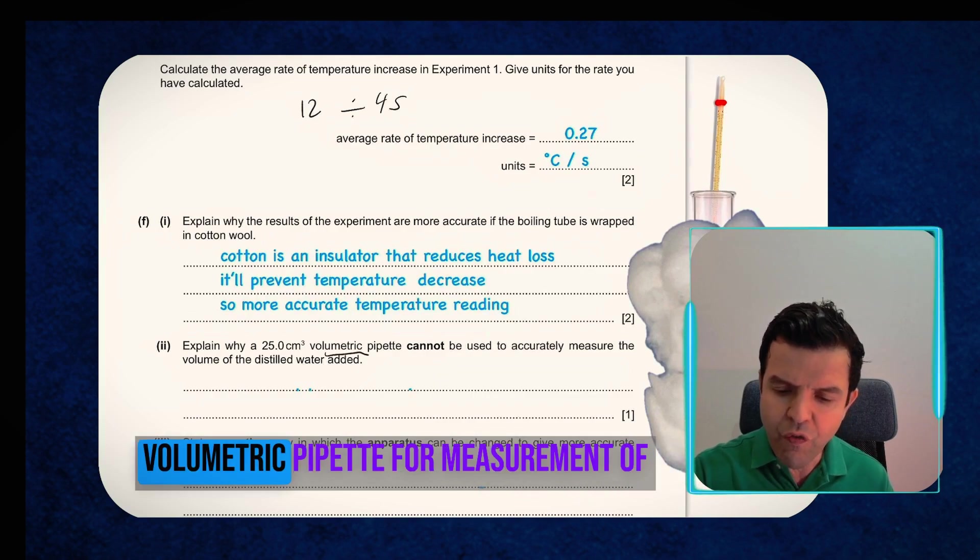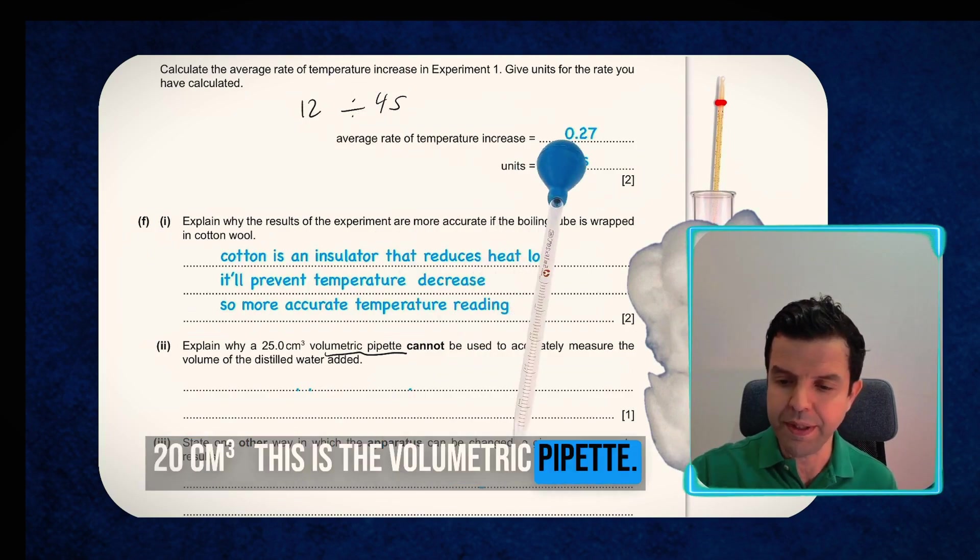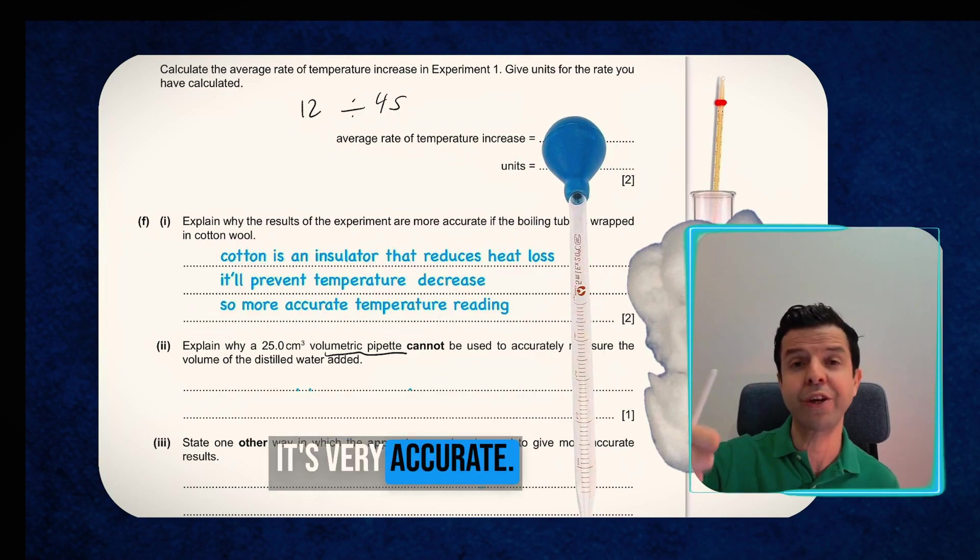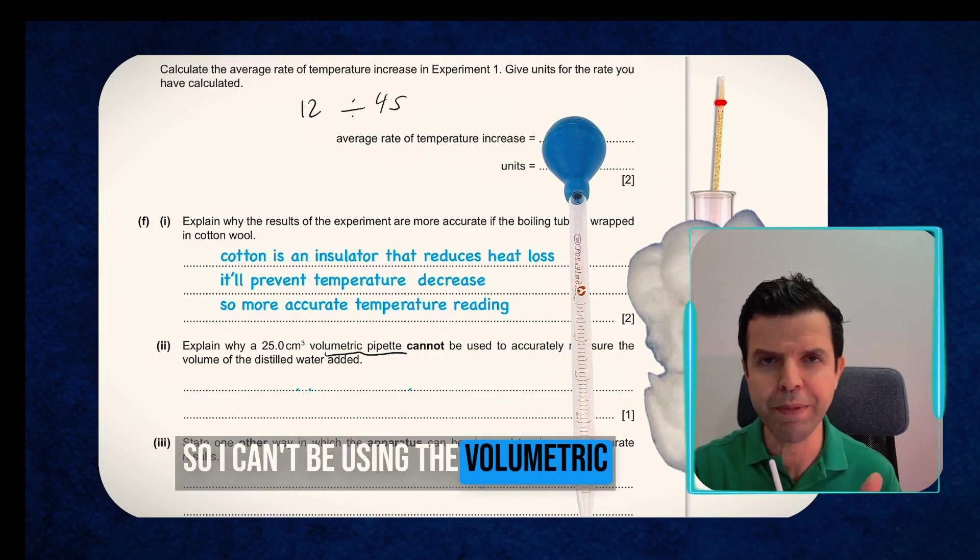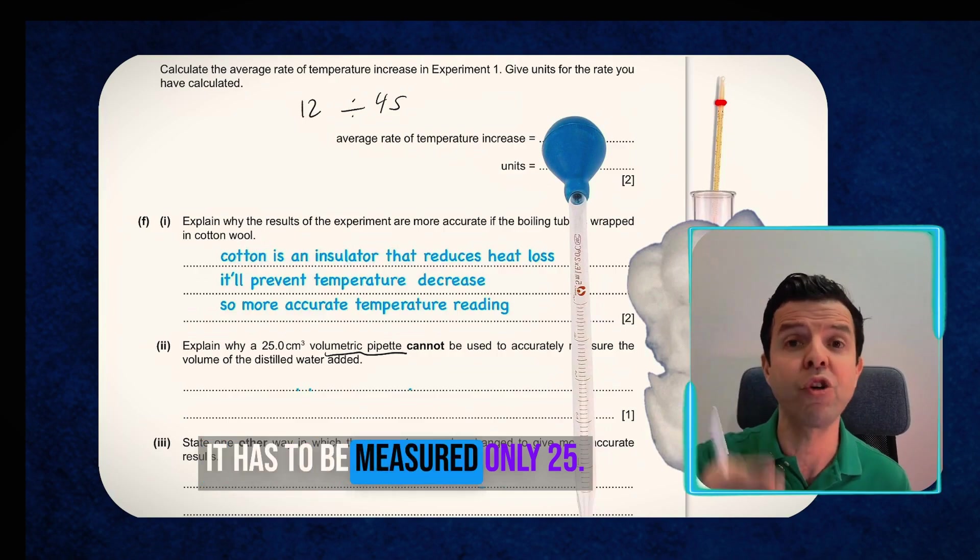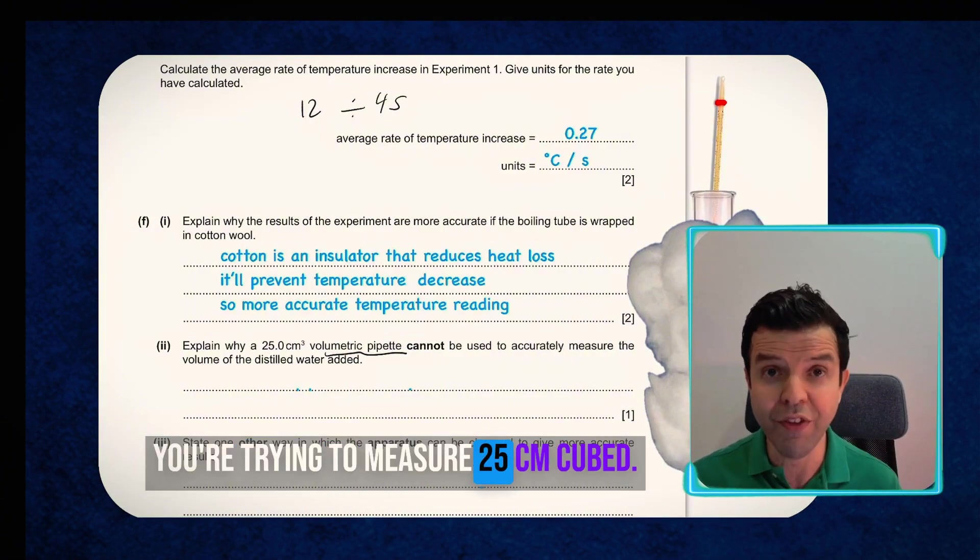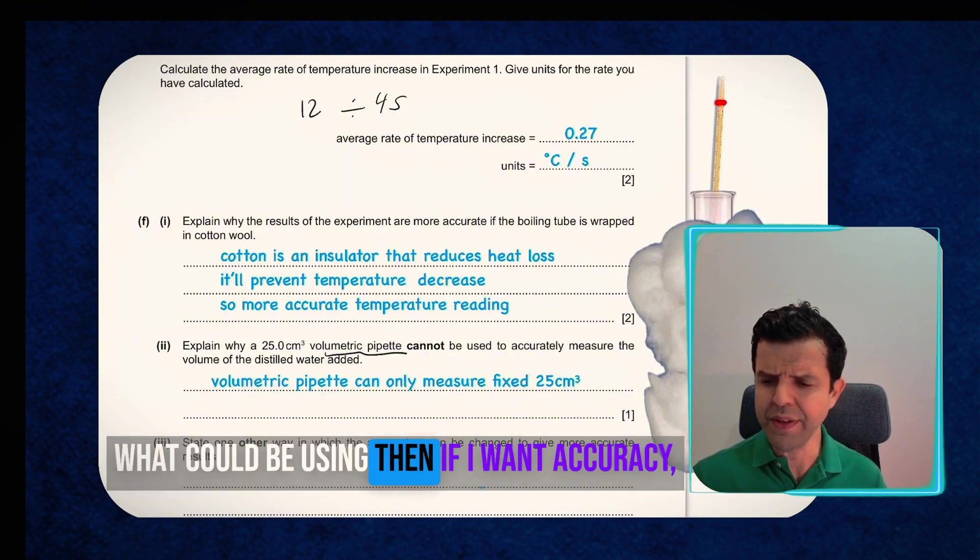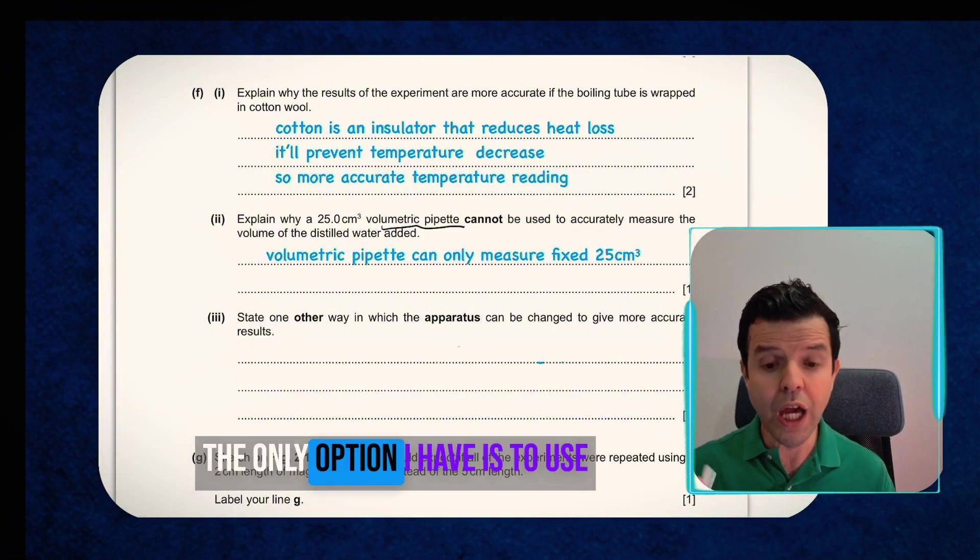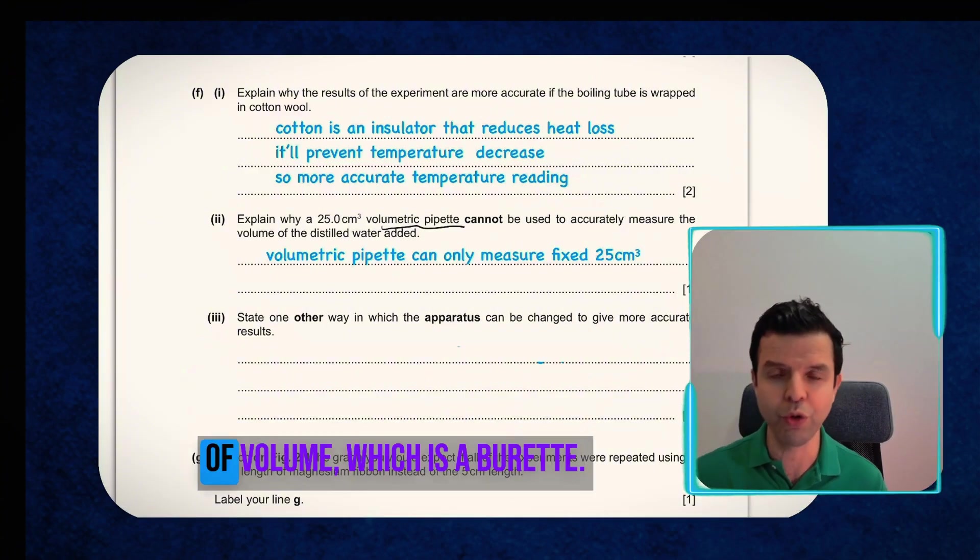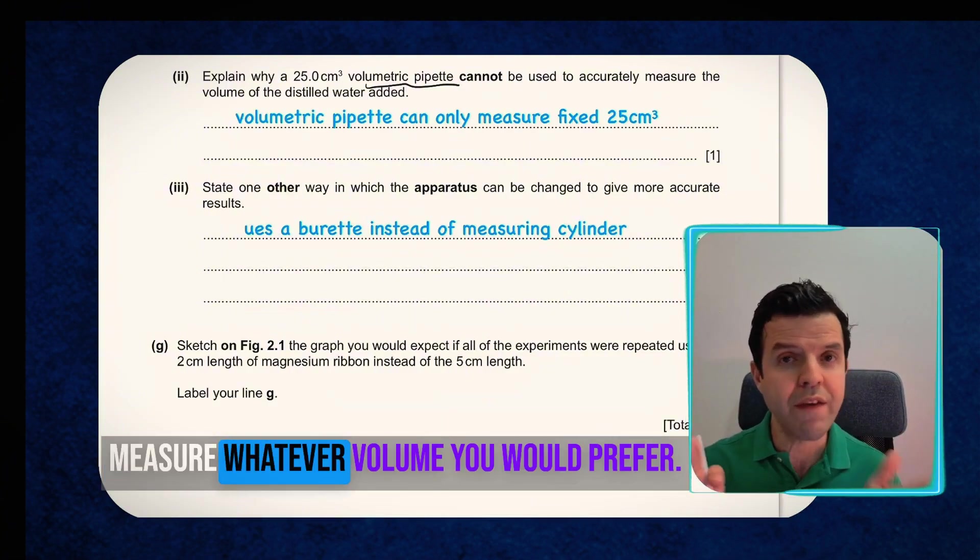Next, they said, explain why can't you use a volumetric pipette for measurement of 20 cm³. This is a volumetric pipette. Volumetric pipette has one drawback. It's very accurate, it's very quick, but it only measures fixed volume. So I can't be using the volumetric pipette to measure 20, not even 24. It has to be measured only 25. So I'm going to tell them that here. You can't be using volumetric pipette unless you're trying to measure 25 cm³. What could be using then if I want accuracy and I want to use the measuring cylinder and I cannot be using the volumetric pipette? The only option I have is to use the third measurement tool of volume, which is a burette. The burette provides me with accuracy. And unlike the volumetric pipette, you can measure whatever volume you would prefer.